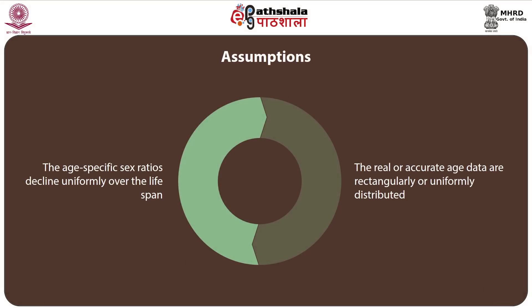The second major assumption is that the age-specific sex ratio declines uniformly over the age span. The United Nations joint score works when both these assumptions hold well together, and violations of either assumption lead to inaccurate data patterns. There can be several reasons for departures from these assumptions, inherent in the nature of the age and sex distribution.